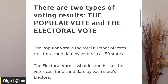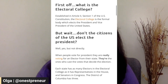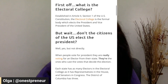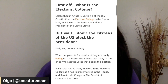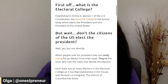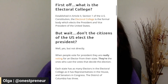Now let's dig into it. There are two types of voting results: the popular vote and the electoral vote. The popular vote is the total number of votes cast for a candidate by voters in 50 states. The electoral vote is the votes cast for a candidate by each state's electors. What is the Electoral College? Established in Article 2, Section 1 of the U.S. Constitution, the Electoral College is the formal body which elects the president and vice president. When people vote for president, they're really voting for an elector from their state — they are the ones who cast the votes that decide the election. Each state has as many electors in the Electoral College as it has representatives in the House and senators in Congress.